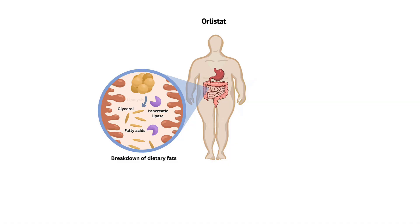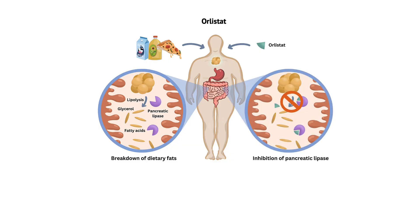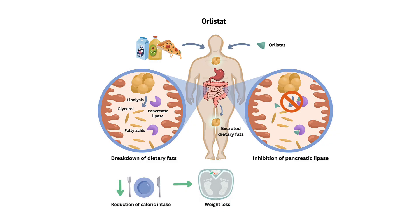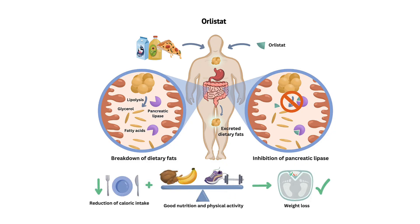This process, known as lipolysis, is essential for the absorption of fat by the small intestine. When a person takes Orlistat with food, the drug binds to the active site of pancreatic lipase, effectively blocking its action. As a result, the triglycerides in the diet are not broken down and cannot be absorbed by the small intestine. Instead, they pass through the gastrointestinal tract unabsorbed and are eventually excreted in the feces. By blocking the absorption of approximately 30% of dietary fats, Orlistat helps reduce the overall caloric intake, leading to weight loss over time. It is most effective when combined with a reduced-calorie, low-fat diet, and regular physical activity as part of a comprehensive weight management program.